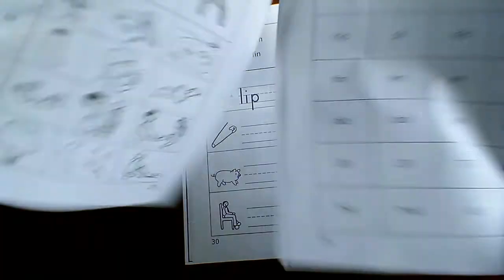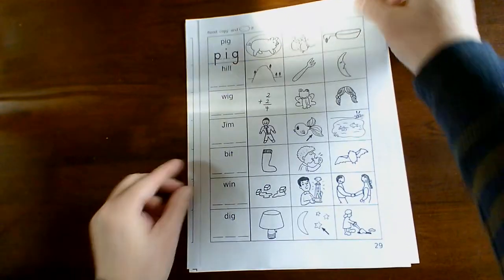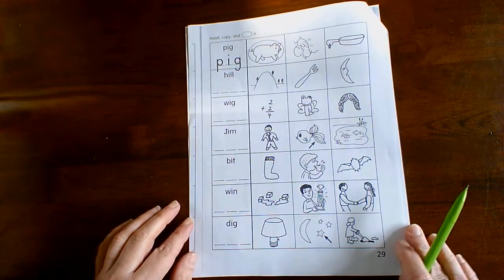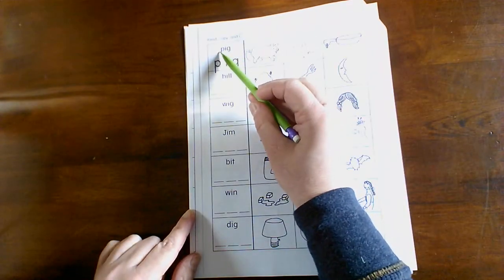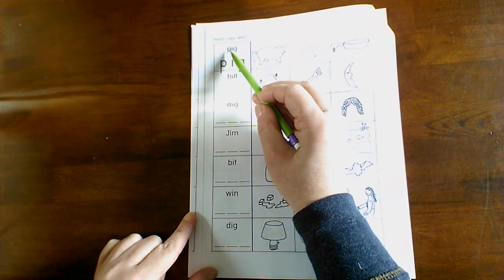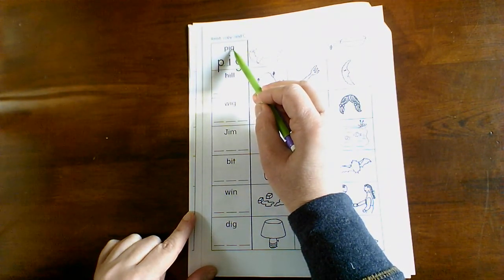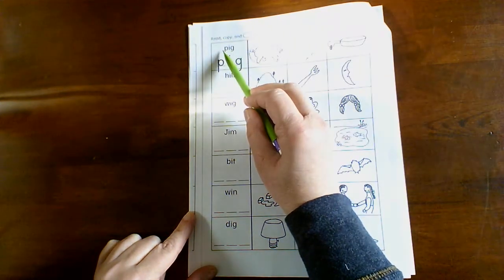Let's look at page two. It says read, copy, and circle it. So you're going to practice reading this word. Remember, make each sound slowly and then say it fast. P-I-G. And then say it fast. Pig.